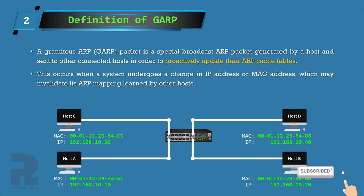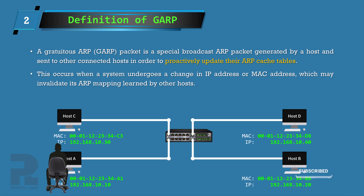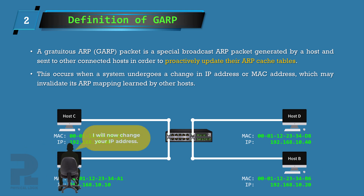The Gratuitous ARP message might be seen as unnecessary, but it is in fact a measure taken by devices on a network to inform other hosts of a sudden change in their ARP mapping.